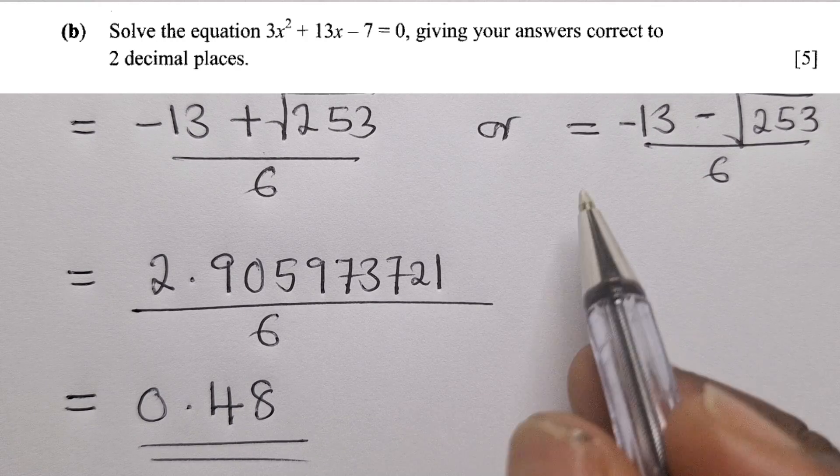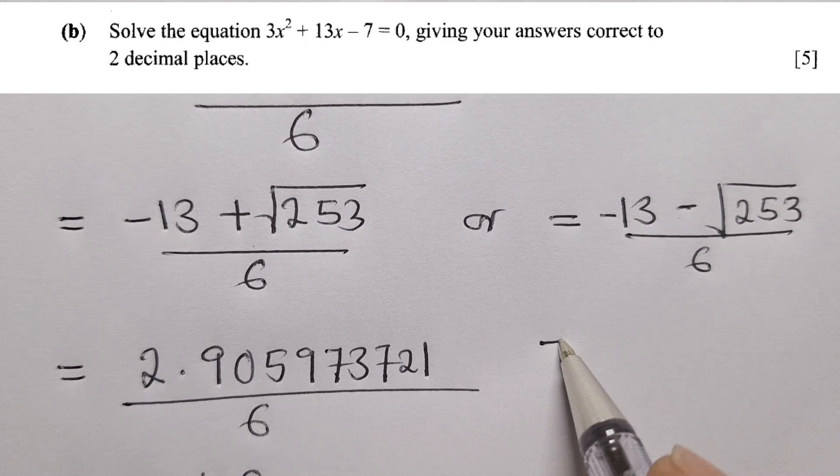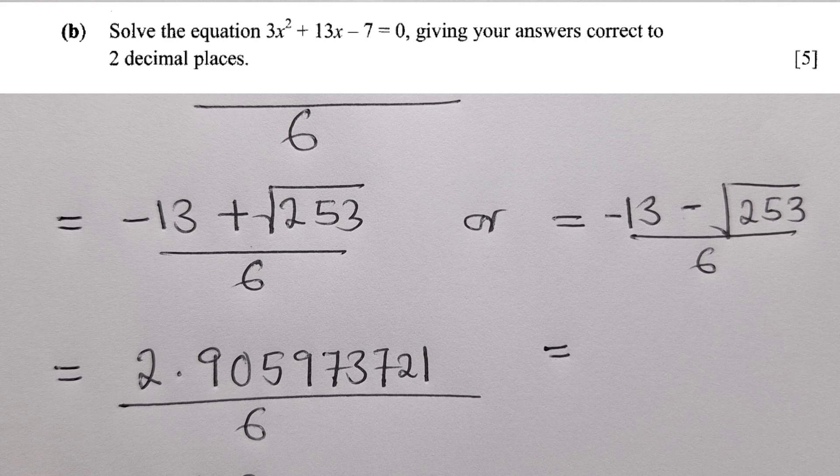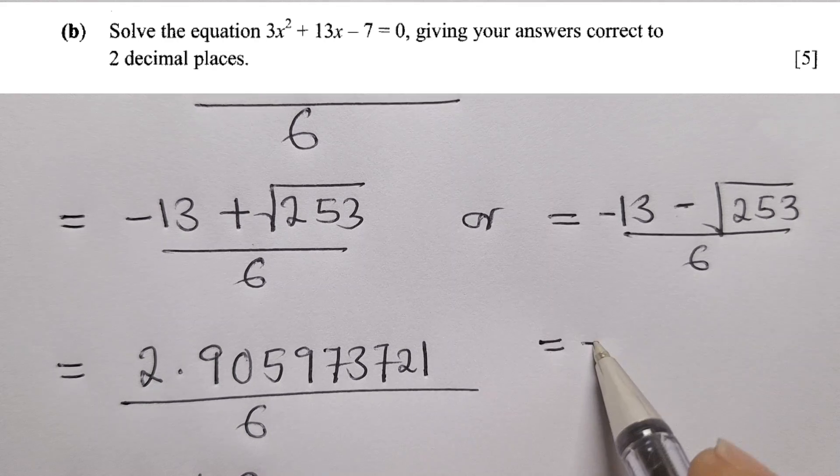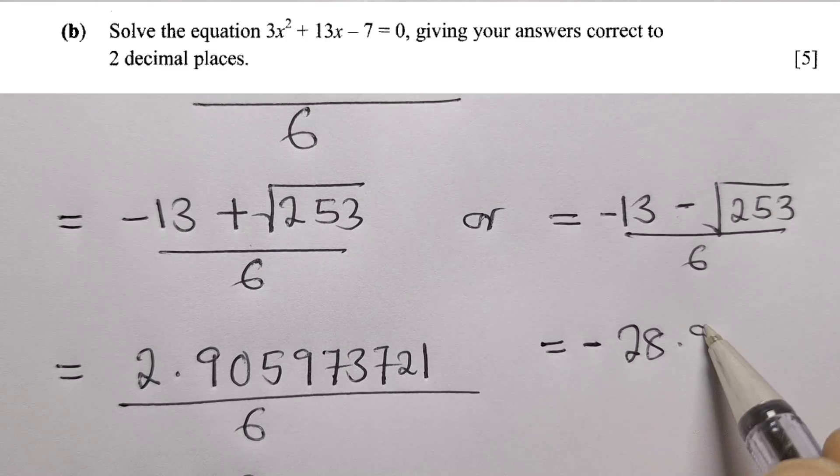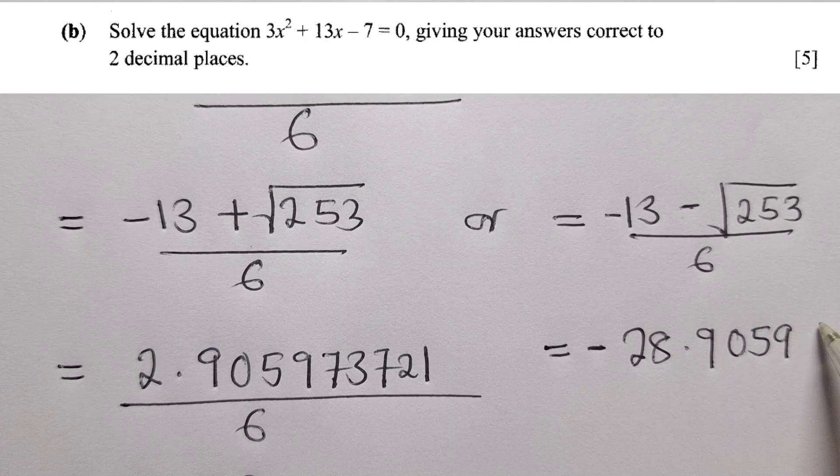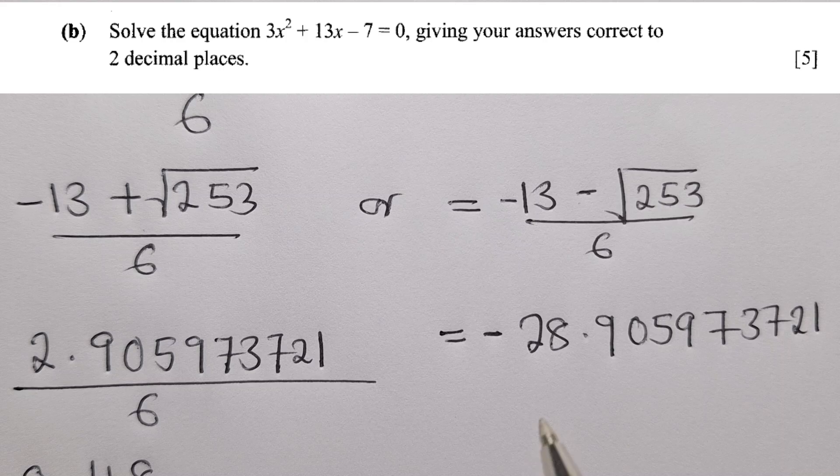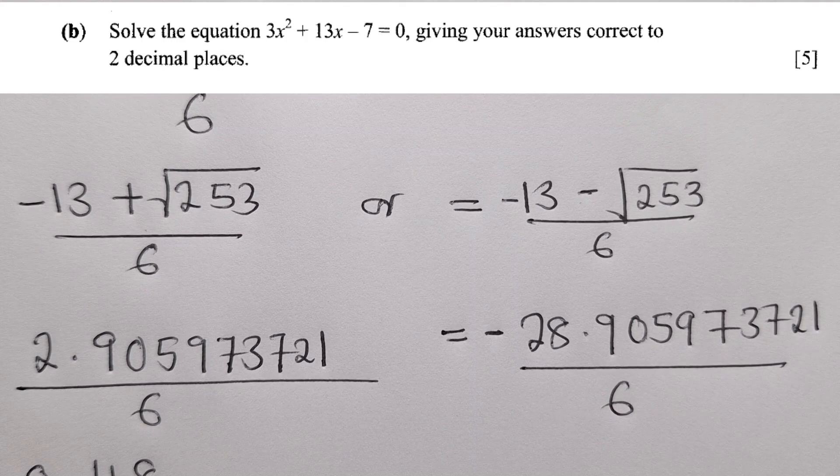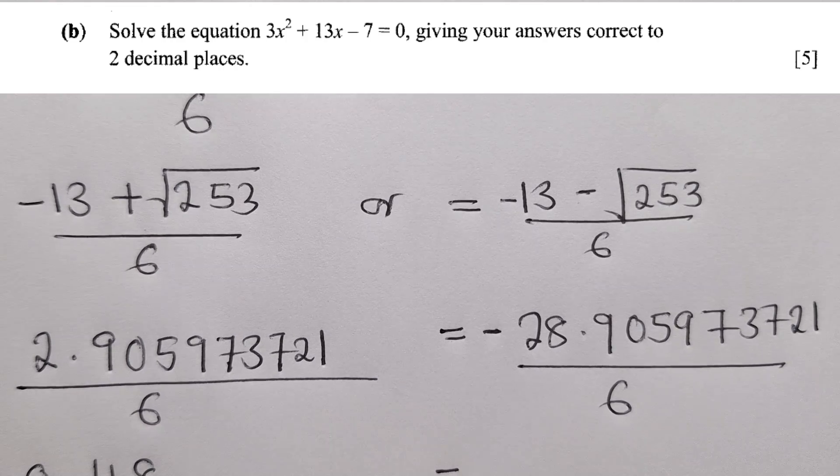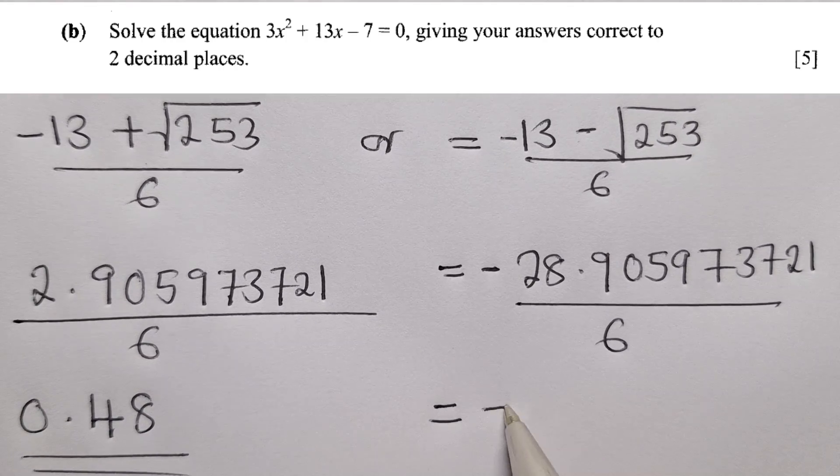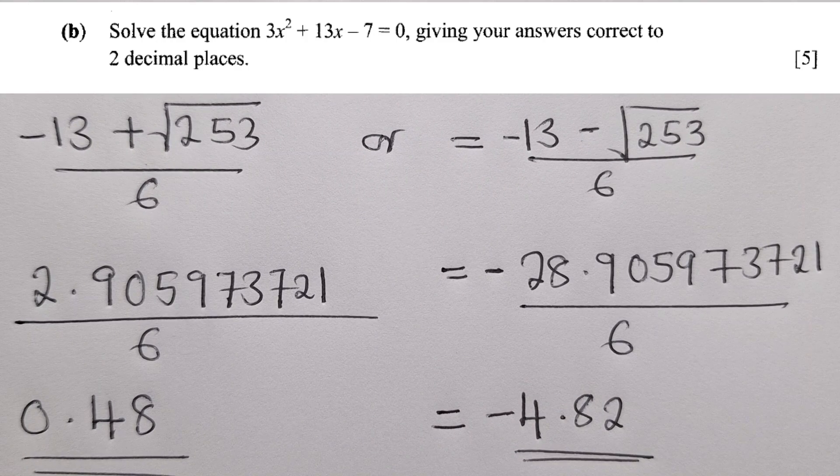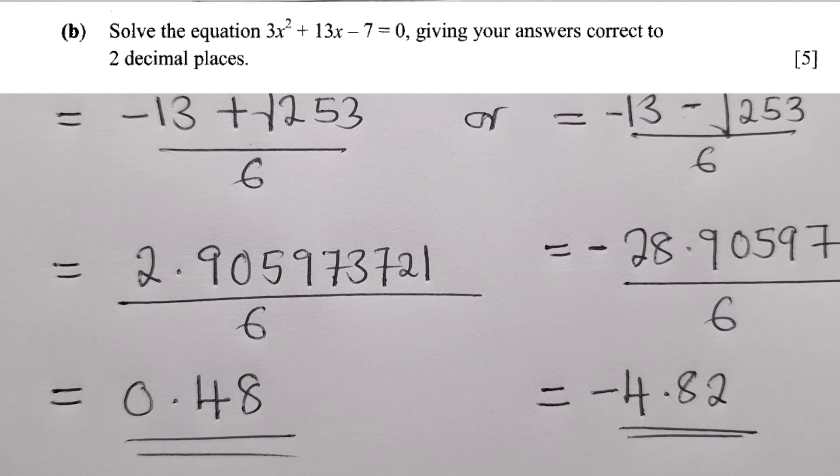So from here, we come to this other one. So here we should say equal to, we say negative 13 minus square root over 253. Of course, this one is giving us negative 28.905973721. So this is what we are getting for the second one. We divide by 6. When we divide by 6, it's giving us a final answer to be equal to negative 4.82 in two decimal places. So these are the two solutions of the quadratic equation.